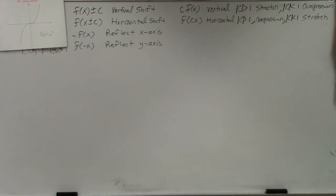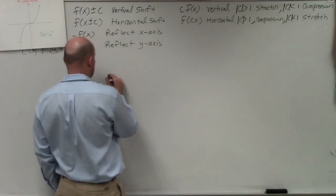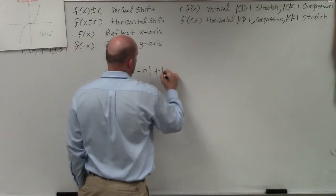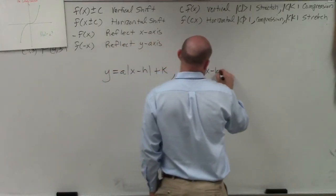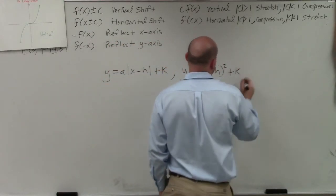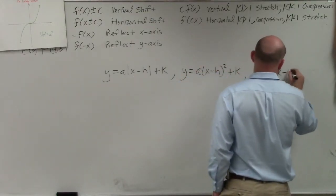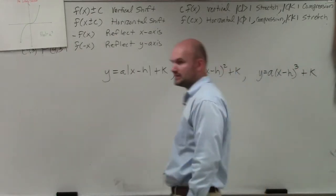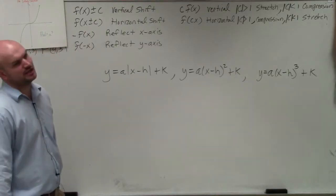So in Algebra 2, basically we learned two functions that we dealt with transformations. Actually, you guys did three. y equals a times x minus h plus k. You guys did y equals a times x minus h squared plus k. And you should have also at least been exposed to y equals x minus h cubed plus k. So those are kind of like three functions that we dealt with as far as transformations: absolute value, quadratic, and cubic.